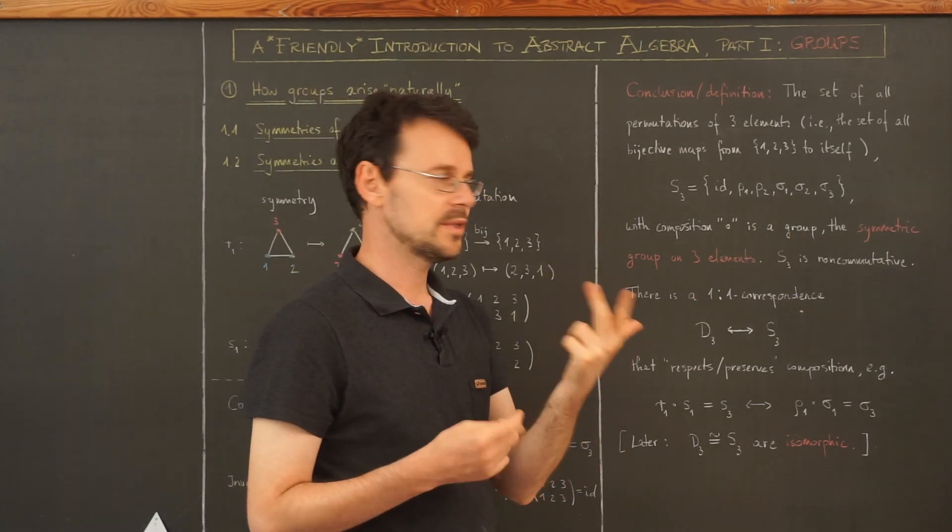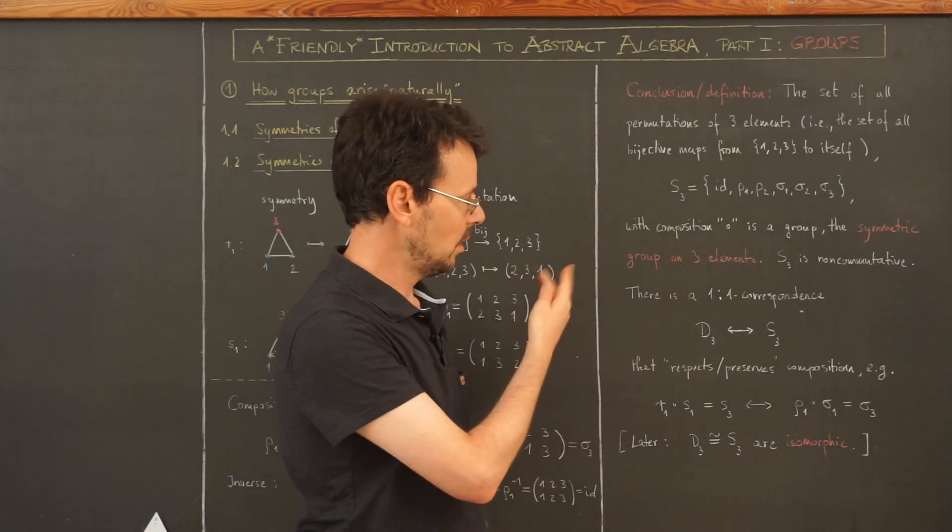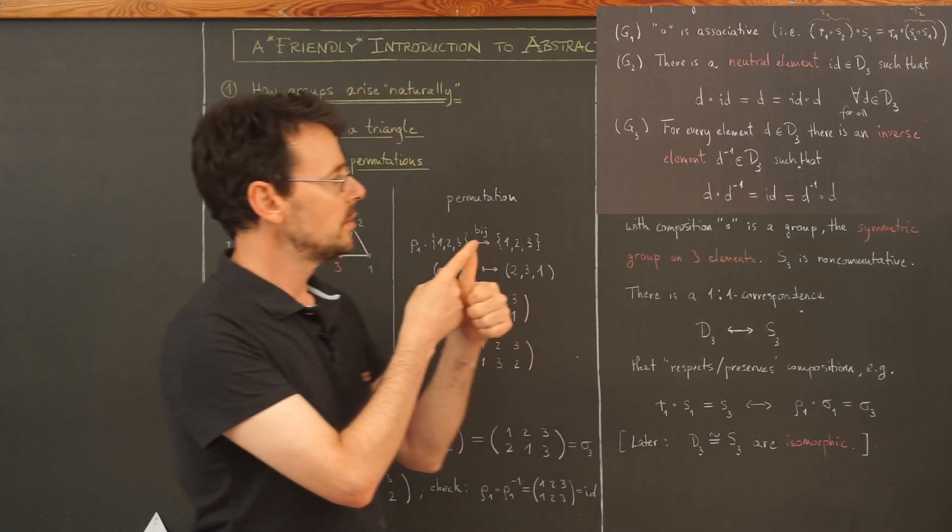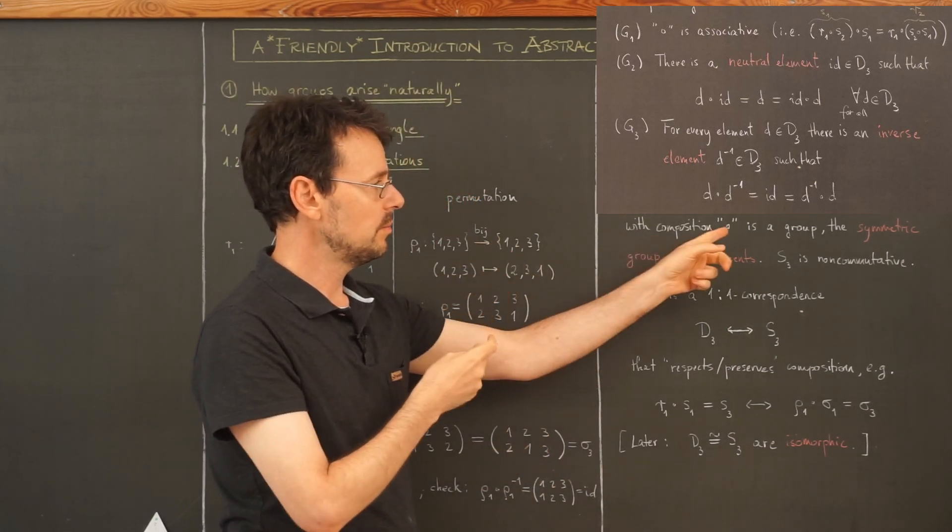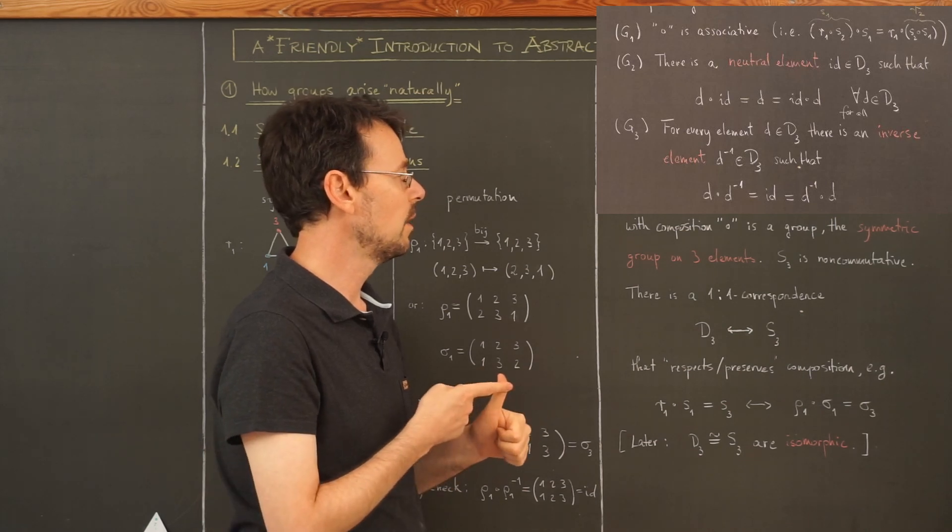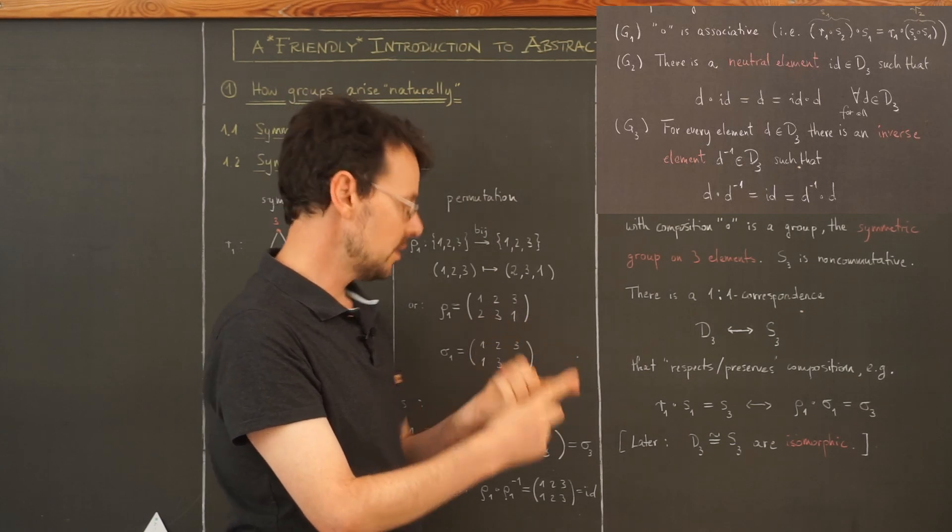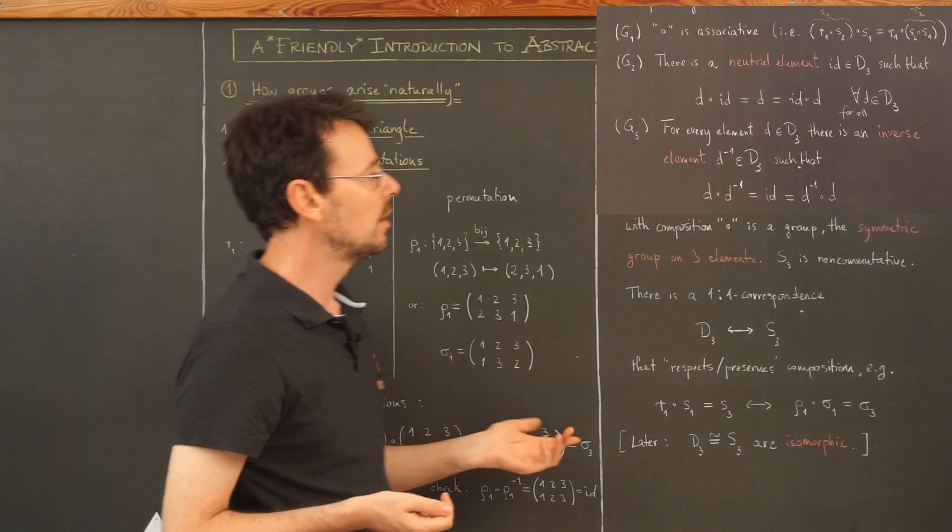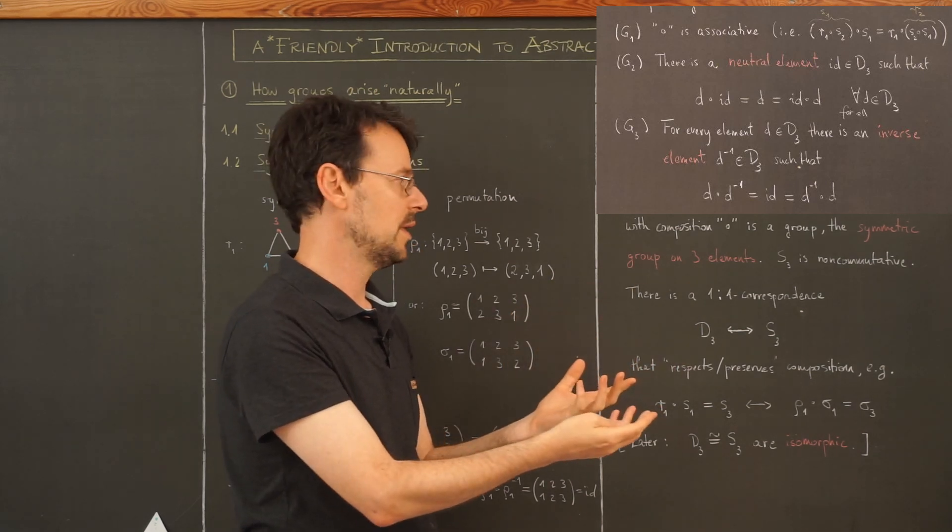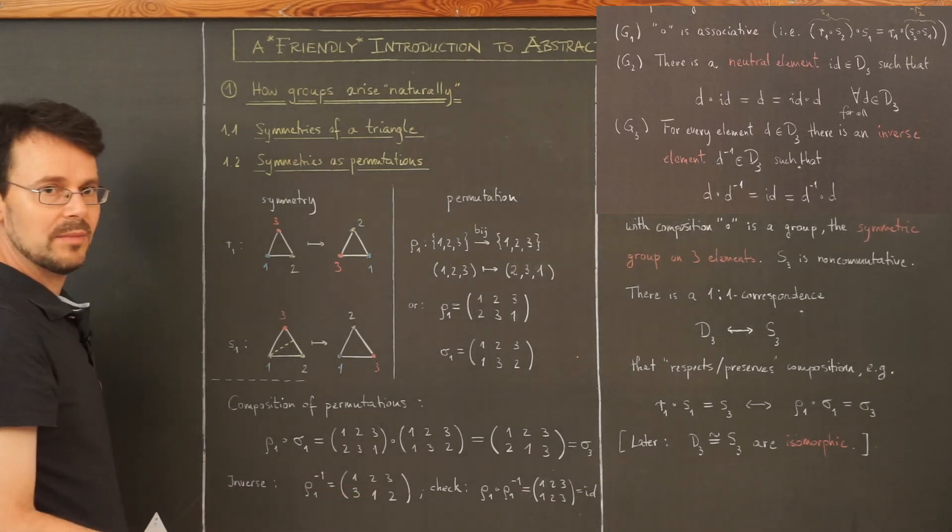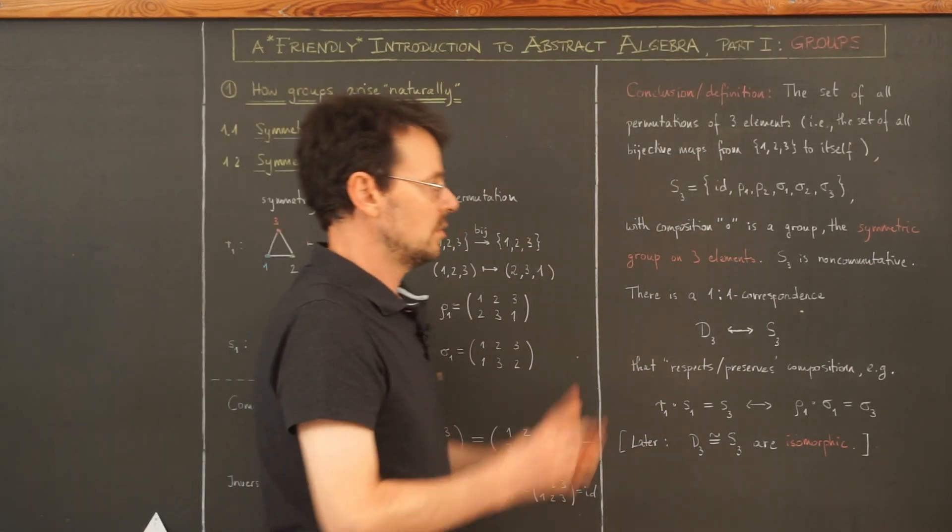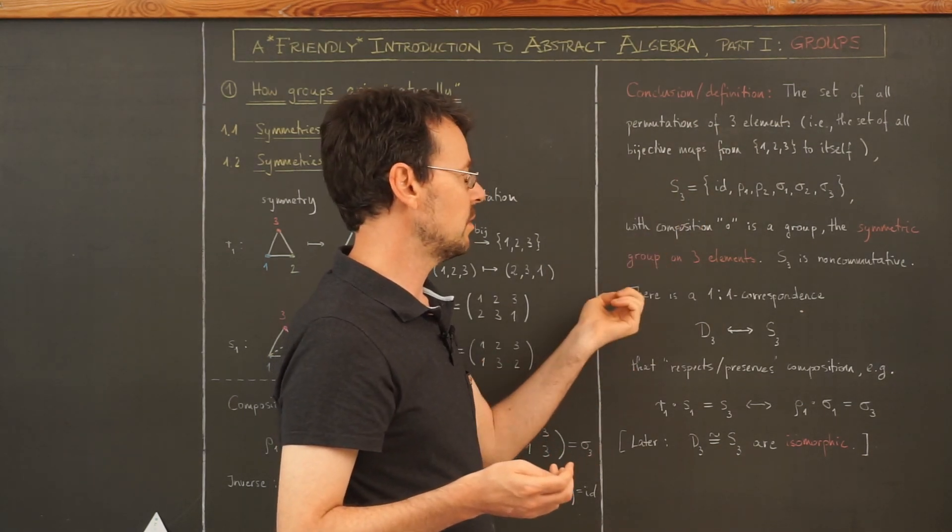This whole set together with composition then forms a group. This group is called the symmetric group on three elements. Beware, that doesn't mean that there are three elements in this group. This group has six elements but that the permutation permutes three different elements. Why is this true? We need associativity. This is always true for composition of maps. There must be an identity, a neutral element, of course. This is this permutation that does nothing. And for each element there must be an inverse element that reverses the action of the first element. So we have a group.